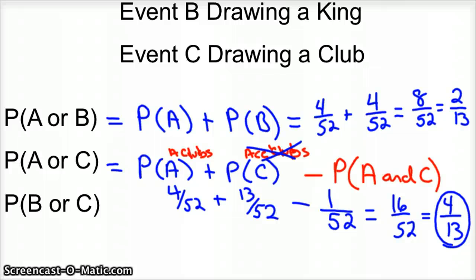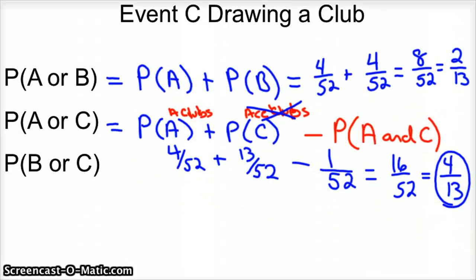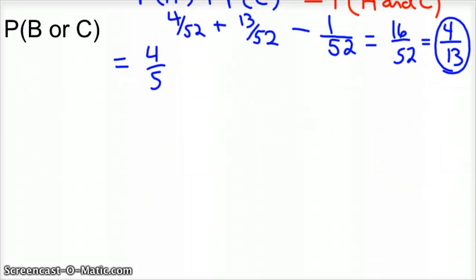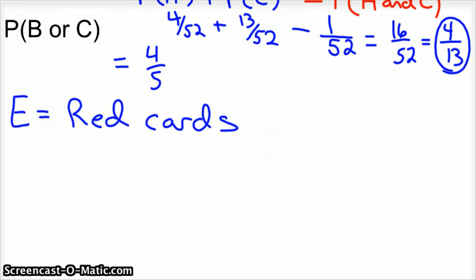And then the king or a club is pretty similar, because there's 4 kings. I should have picked a different example. And I guess I have time. Let's not do that one, because it's exactly the same as the last one. Let's do a different one. Let's add an event E here. And let's call event E red cards. Okay, so half the deck is red cards. And let's do another event. Let's call F black cards.